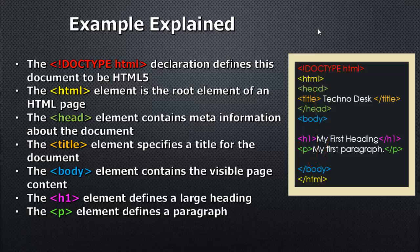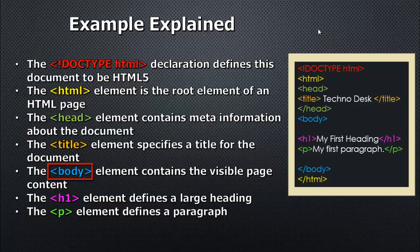The head element contains meta information about the document. The title element specifies a title for the web page or document — in the address bar you can see the web page name which comes from the title. The main section is the body section, which contains the visible page content. Then h1 defines a large heading, and p defines the paragraph. We will explain these with examples in the next videos.